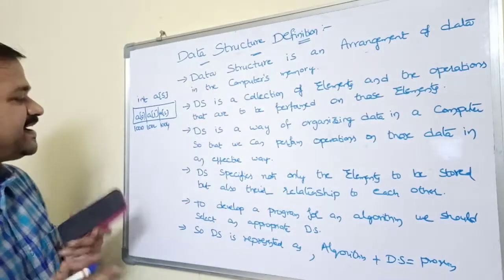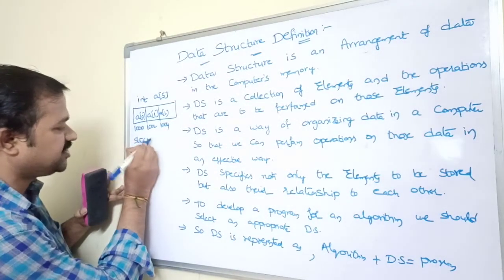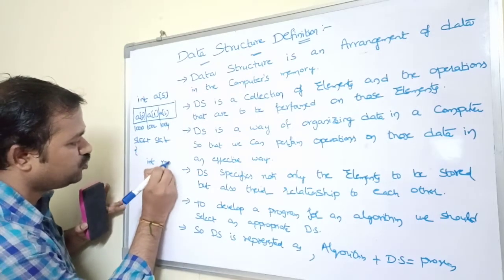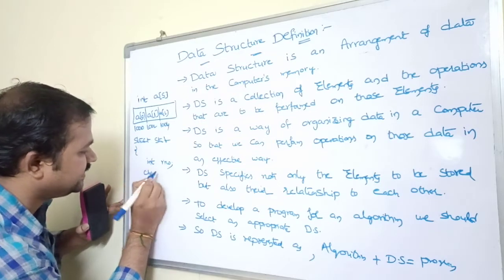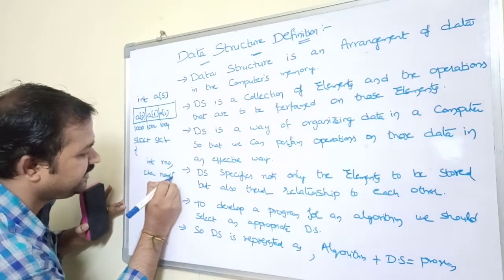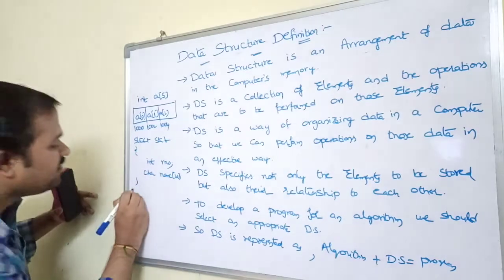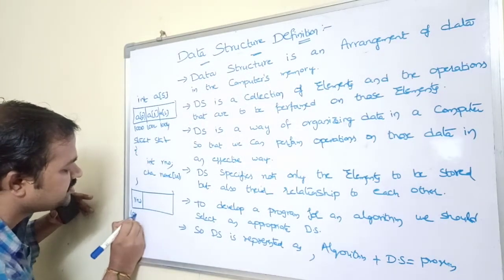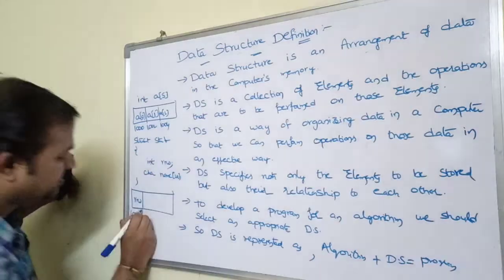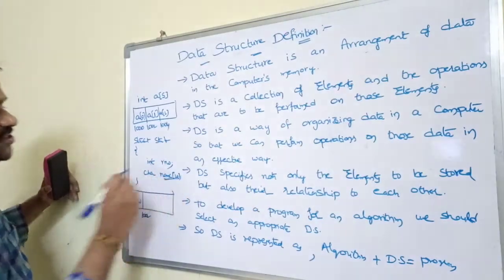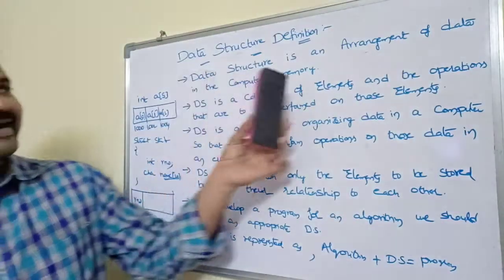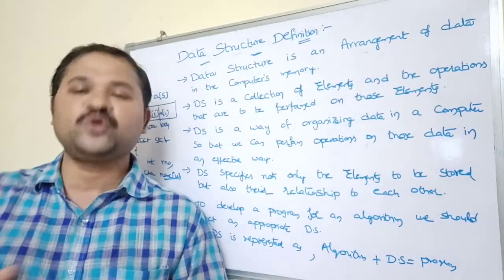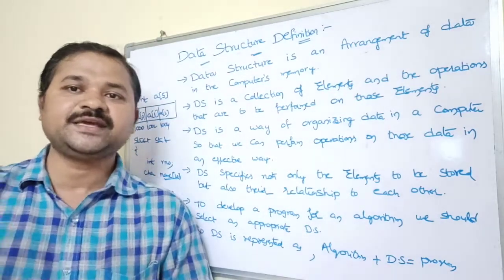Similarly, if you take a structure — for example, struct student with int rollNumber and char name[20] — the data is also stored in adjacent memory locations. If the size of integer is 2 bytes, rollNumber occupies locations 1000-1001, and name starts at 1002. The key point is that data structures specify how data is stored in memory.